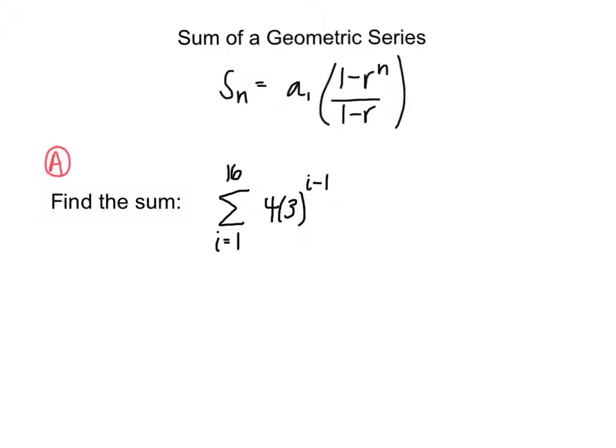So the first problem will tell us to find the sum of this series here. We can identify the first value by plugging in 1 for i. So a sub 1 equals 4. Now we can plug this into our sum of a geometric series formula.